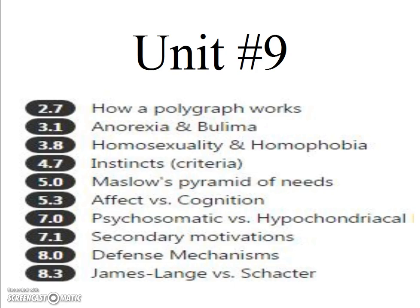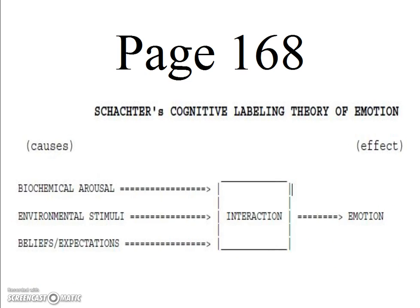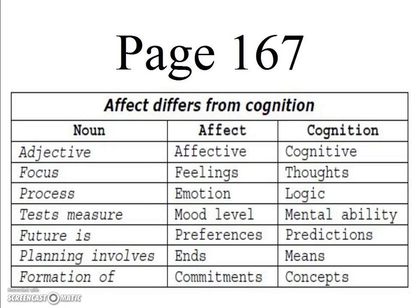In Unit 9, students want to learn more about the theories of emotion offered by Schachter and James and Lange. The James-Lange theory says that behavior in the form of physiological arousal is the cause producing emotions. Schachter's cognitive labeling theory says that we have an interaction of biochemical arousal, environmental stimuli, and beliefs and expectations — these interact to produce emotion. What I think is most important from Unit 9 is the difference between affect and cognition, summarized in a table on page 167.